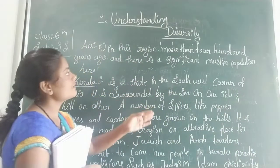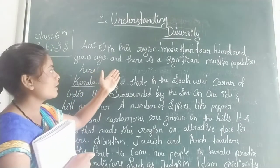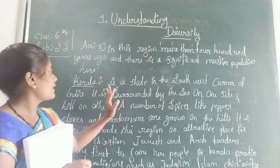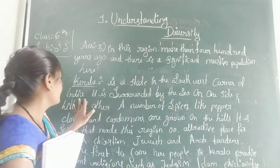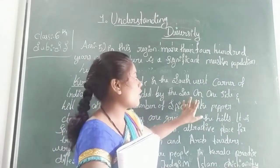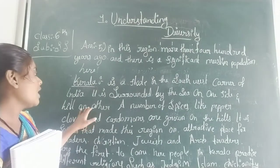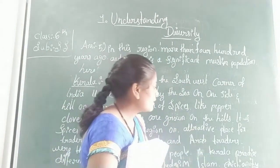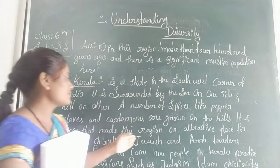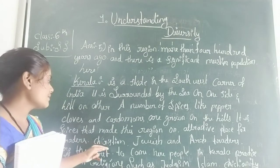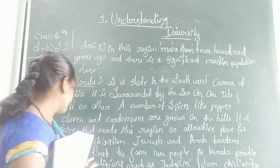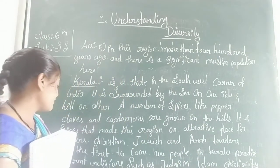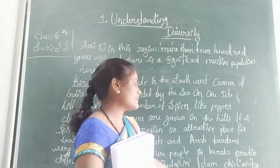Kerala is a state in the south-west corner of India. It is surrounded by the sea on one side and hills on the other. A number of spices like pepper, cloves, and cardamom are grown on the hills. It is the spices that made this region an attractive place for traders. Christian, Jewish, and Arab traders were the first to come here.